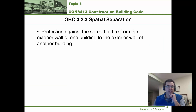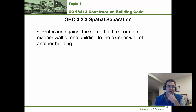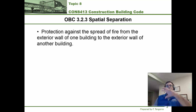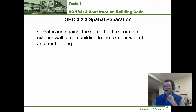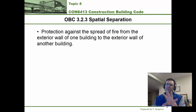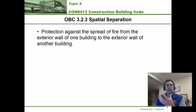The topic today is spatial separations, which is under section 3.2.3. The whole point of this section is to learn about how the building code gives guidelines about the protection of the spread of fire from one building to another, by giving guidelines on what the exterior of a building must look like. Specifically, we're going to learn about protection against the spread of fire from the exterior wall of one building to the exterior wall of another building.